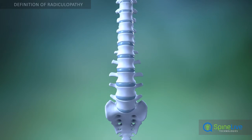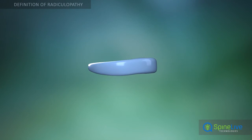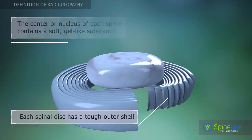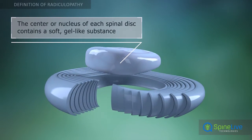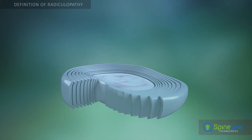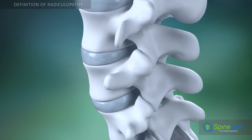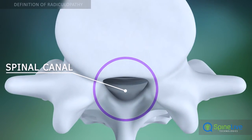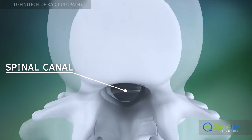Each spinal disc has a tough outer shell called the annulus. The center portion of the disc, the nucleus, contains a gel-like substance. A vertical tunnel which contains the spinal cord is located behind the vertebral bodies.